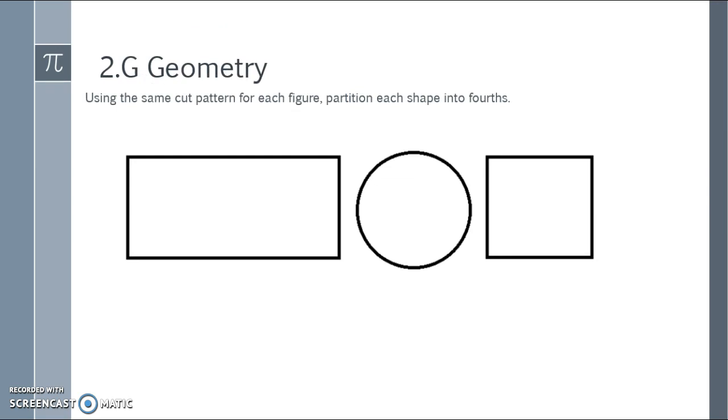Using the same cut pattern for each figure, partition each shape into fourths. So using your pencil or a pen and you have your printout in front of you, give it a whirl and we'll see what we can do. Pause the video and come back. All right, this is how I did it at first. I do a straight line down the middle of each side, so on the top and across the side, and cut them into fourths. Notice that each large item is cut into four equal parts. We will call each part a fourth.